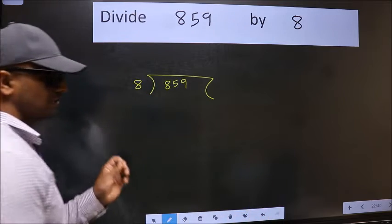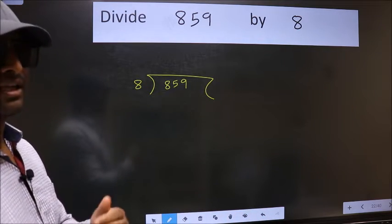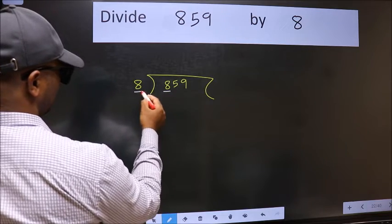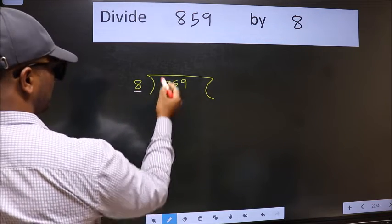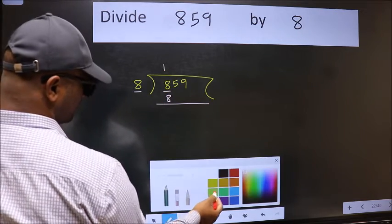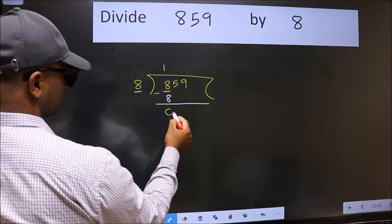This is step 1. Next, we have 8 here and 8 here. When do we get 8 in the 8 table? 8 once is 8. Now we subtract and get 0.